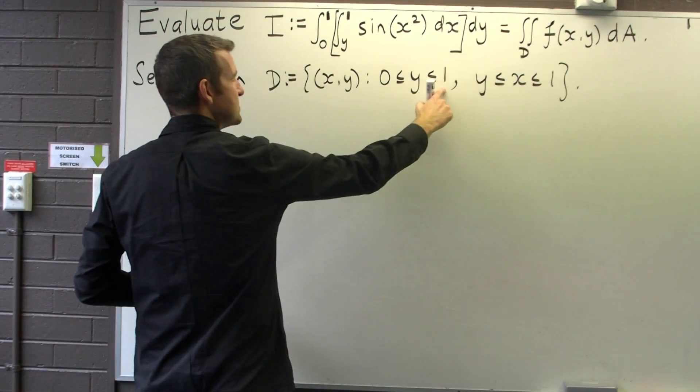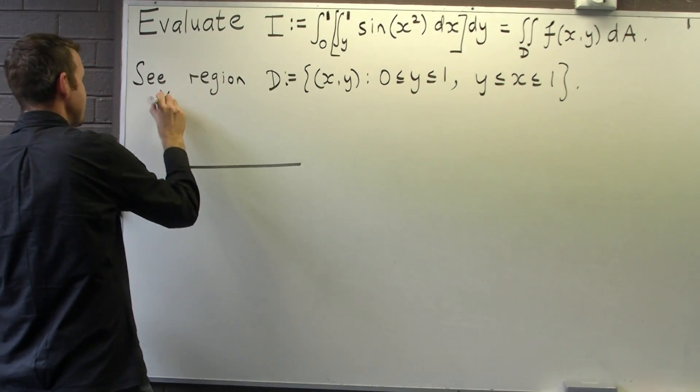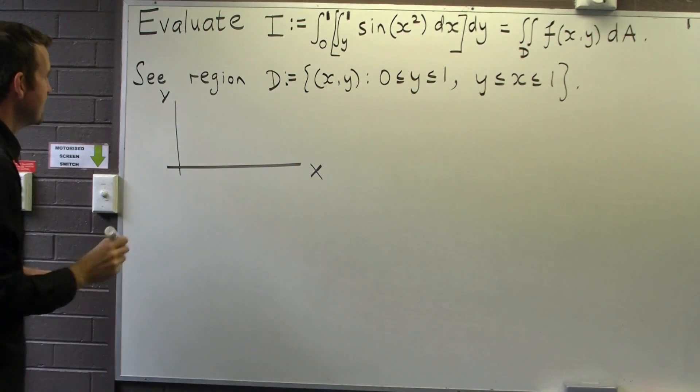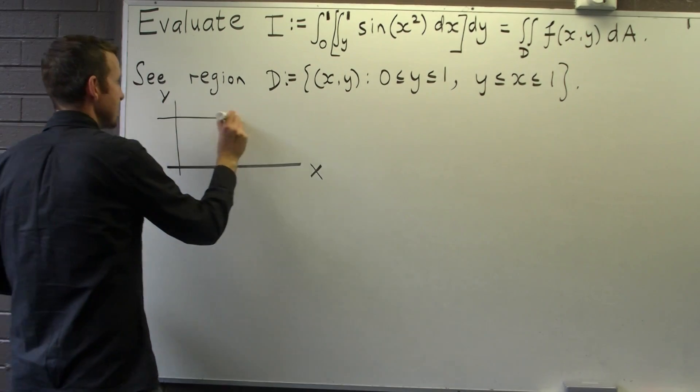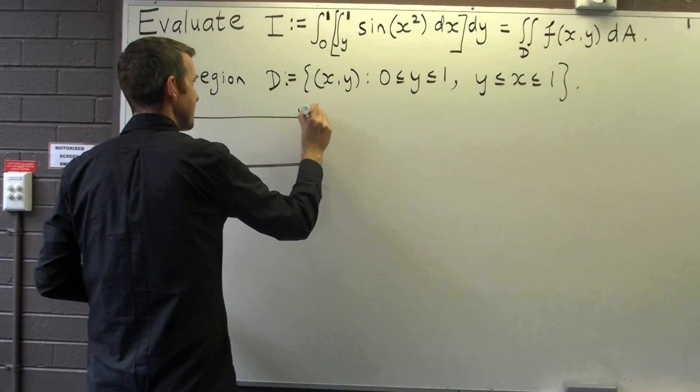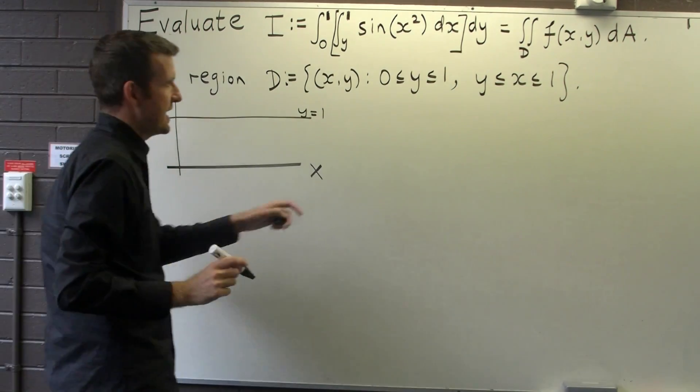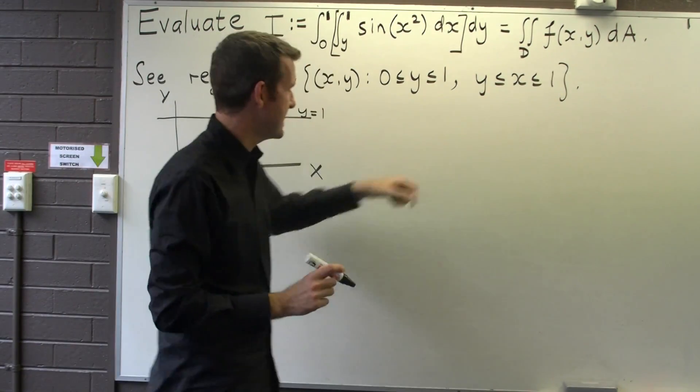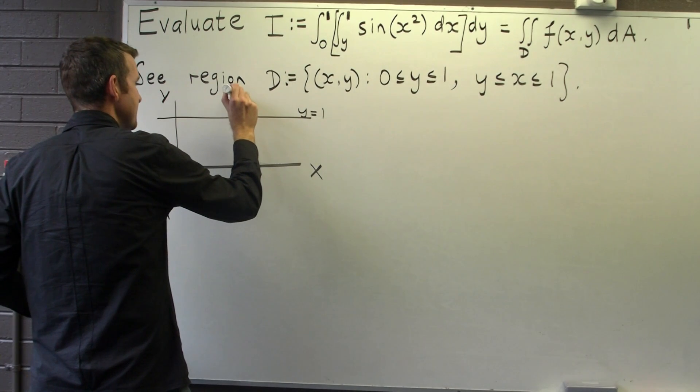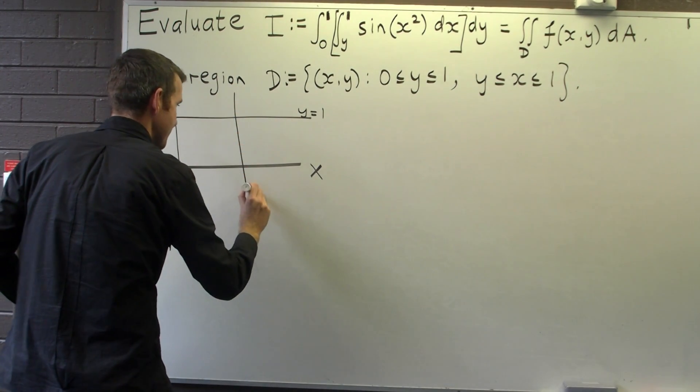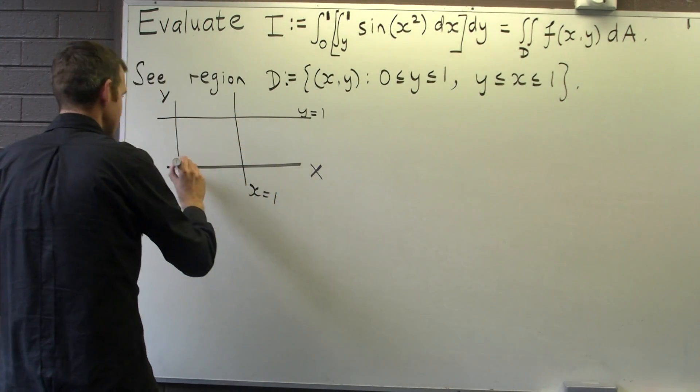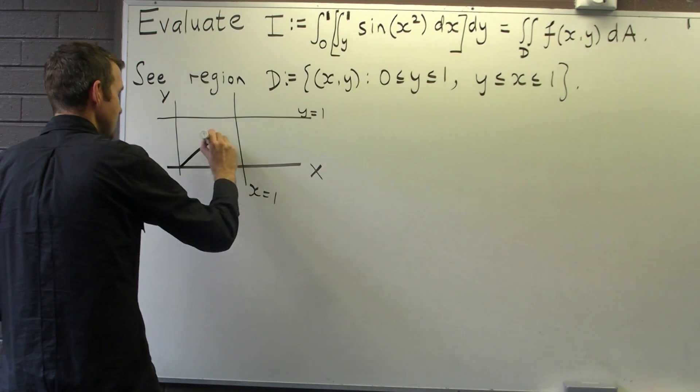So y equals 0 and y equals 1, they're going to be the lines here and just the axis. And x equals 1 and x equals y is going to look something a little like this.